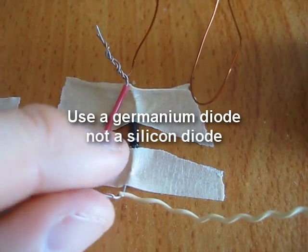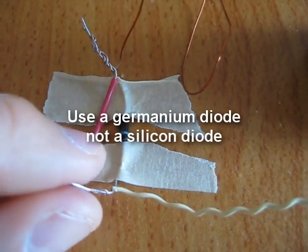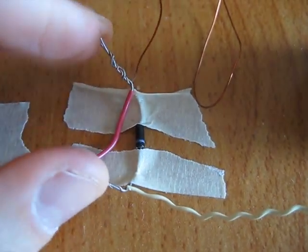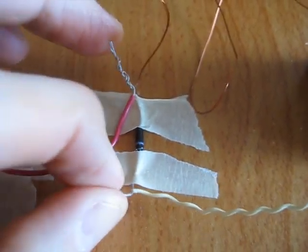I want to talk a bit about the diode right here. I just want to make sure that you get germanium diodes. Not silicon diodes. The silicon diodes don't work very well. You want germanium diodes. I didn't stress that in the first video.